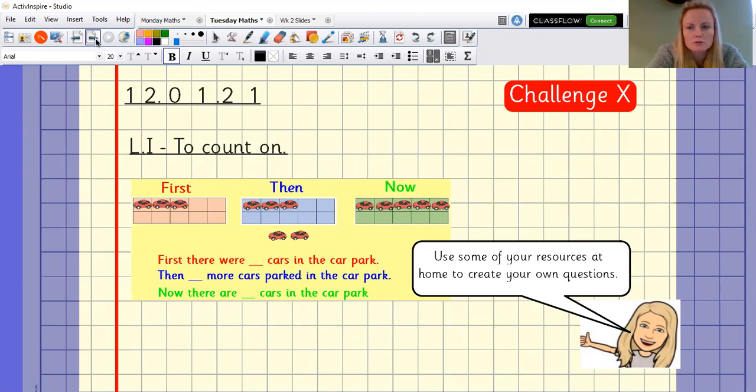So I want you to use your cars, make a car park of 10 cars. And then make your own question. That's an example. If you want to use cars, you can use whatever you like that's in your house. You can even just use counters or pictures of 10 frames, whatever you'd like to complete more of your own questions.